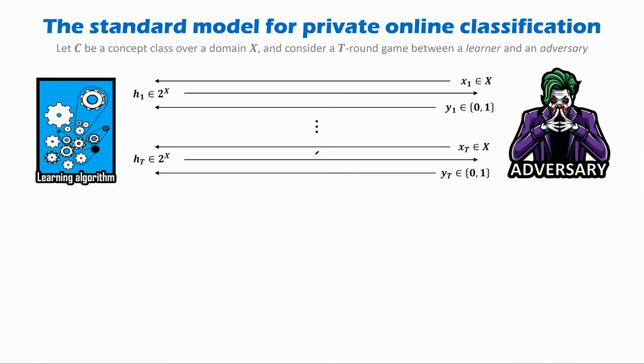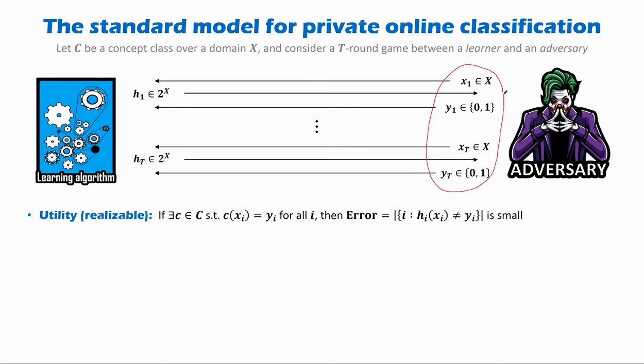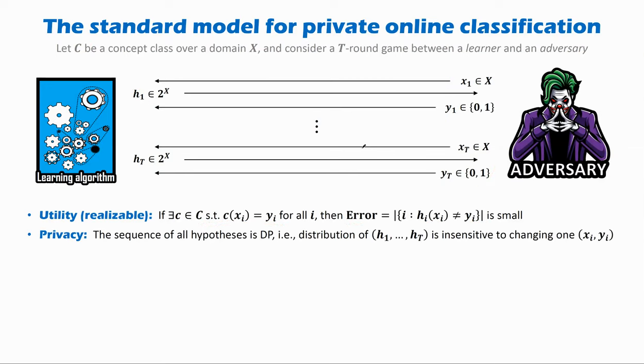This goes on for T rounds, and what we want to guarantee is that assuming all of the labels given by the adversary can be explained by some valid concept from the class C, we want to guarantee that the number of mistakes we make throughout the execution is small, meaning the number of time steps at which the hypothesis we give out fails to correctly classify the corresponding point is small. That's the utility requirement.